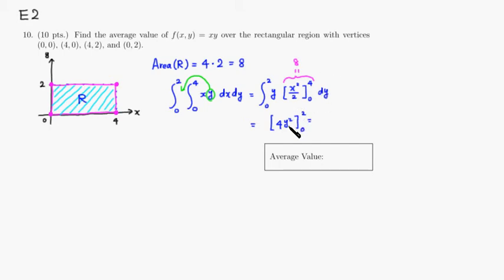So if you plug in 2, so 2 squared is 4, 4 times 4 is 16. And minus 0, so it's 16.